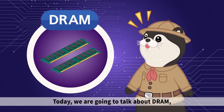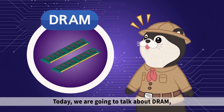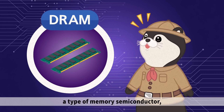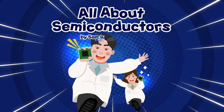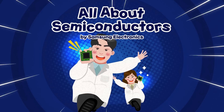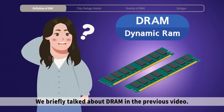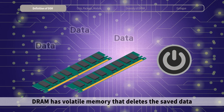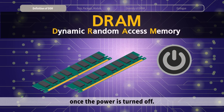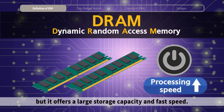Today, we are going to talk about DRAM, a type of memory semiconductor. We briefly talked about DRAM in the previous video. DRAM has volatile memory that deletes the saved data once the power is turned off, but it offers a large storage capacity and fast speed.